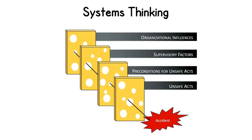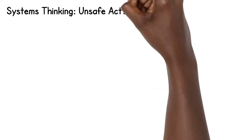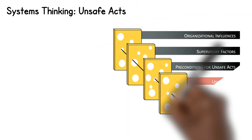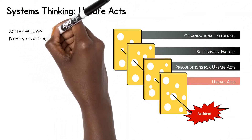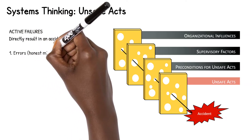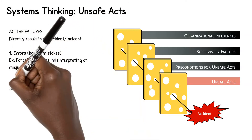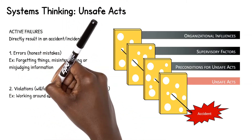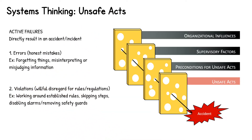We will spend a few minutes walking through each of the four layers of defense described in this model. The first layer is referred to as the unsafe acts layer. This layer is made up of active failures that directly result in an accident or incident. Active failures consist of errors and violations. Errors are honest mistakes that we are all susceptible to. Errors can involve forgetting, misinterpreting, or misjudging information.